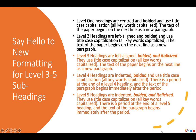APA 7 has introduced changes to levels 3 through 5. Level 3 headings, which were indented in APA 6, are now left aligned, bolded, and italicized, using title case capitalization with text beginning on a new line. Level 4 headings are indented and bolded as before but now use title case capitalization, with a period at the end and the text beginning immediately after the period. Level 5 headings are indented, bolded, and italicized, also using title case capitalization with a period and text beginning immediately after.